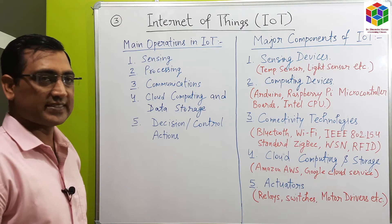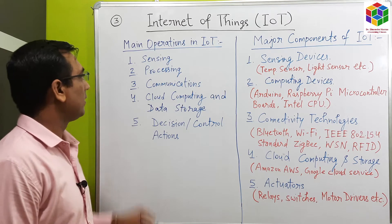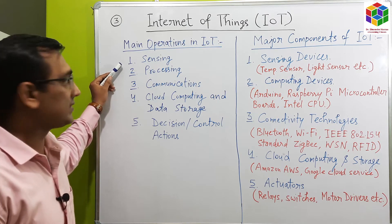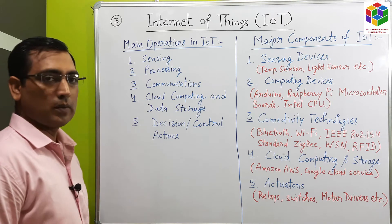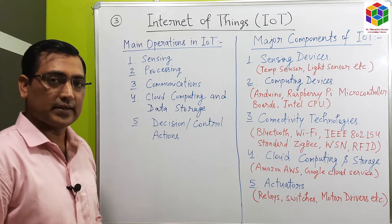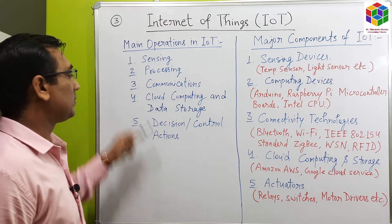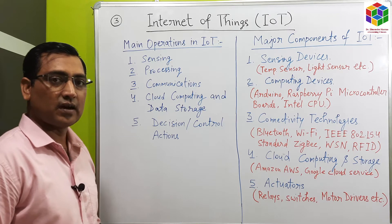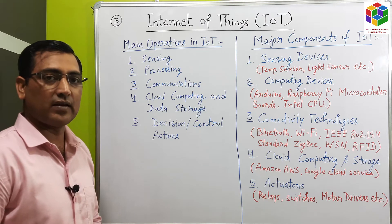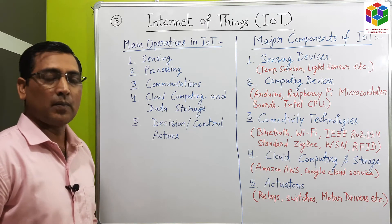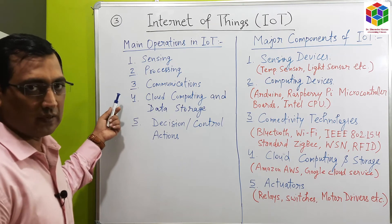Now we will see the main operations in Internet of Things. Number one, sensing operation — in IoT, the sensing devices sense the data. Number two, processing — the next step in IoT is data processing; the data is processed inside the computing devices. Number three, communication — the data is transmitted over LAN, MAN, and WAN, that is local area network, metropolitan area network, and wide area network, using IoT 3G, 4G, and 5G communications.